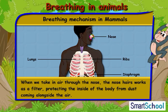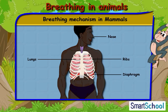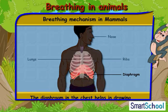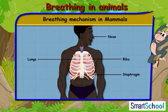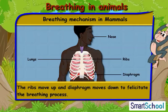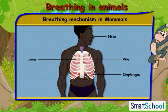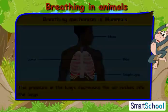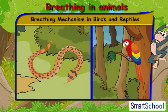When we take in air through the nose, the nose hairs work as a filter, protecting the inside of the body from dust coming alongside the air. The diaphragm in the chest helps in drawing air during the breathing process. The ribs move up and the diaphragm moves down to facilitate the breathing process, and as the pressure in the lungs decreases, the air rushes into the lungs.